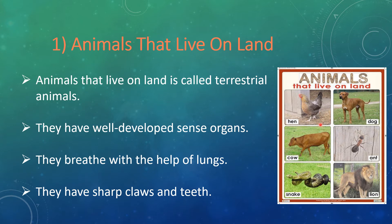Terrestrial animals usually have well developed sense organs, especially the dog. They breathe with the help of lungs like human beings. They have legs which help them to run fast. This is the way to escape from enemies and also catch prey. They usually have sharp claws and teeth.